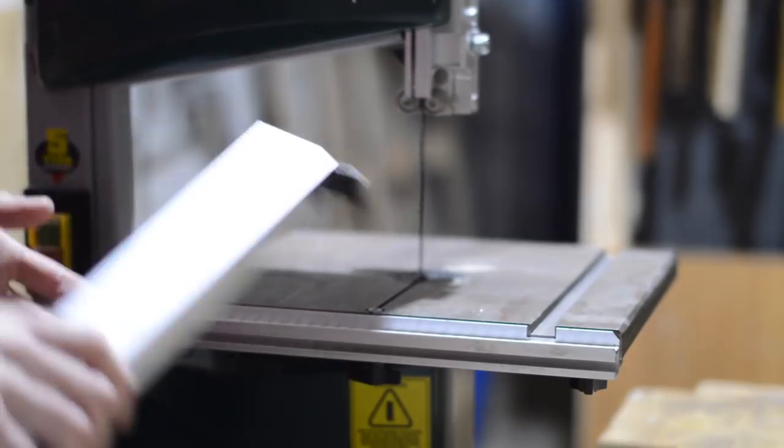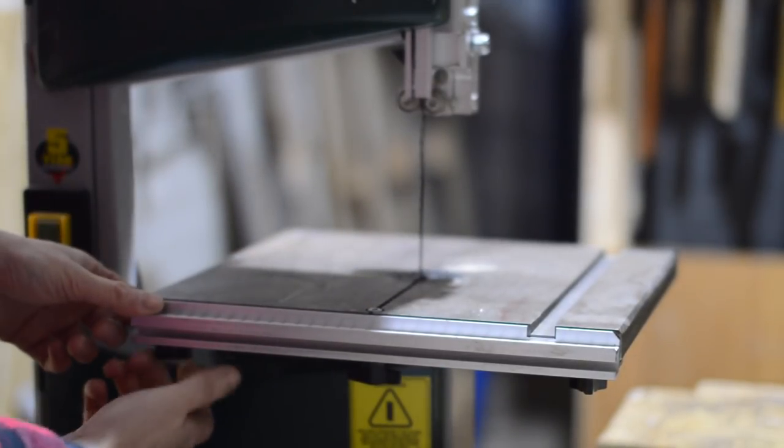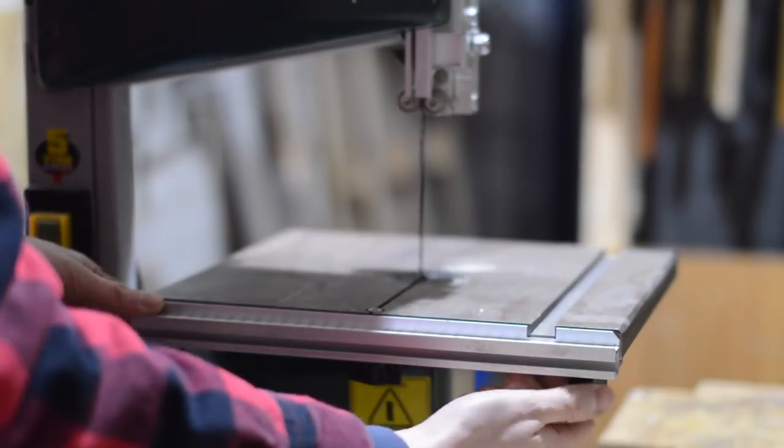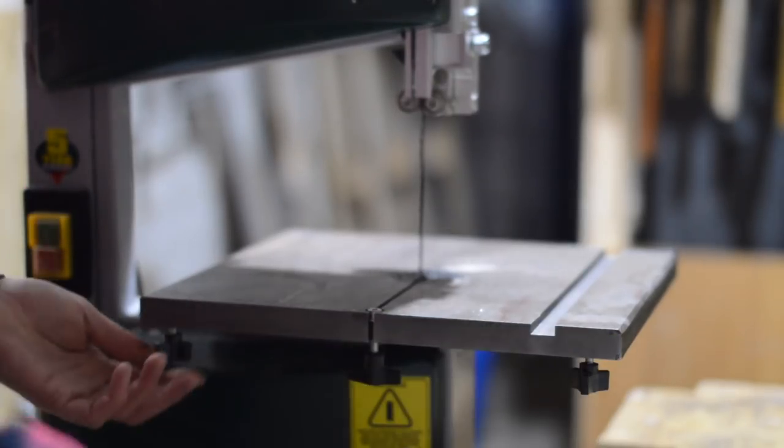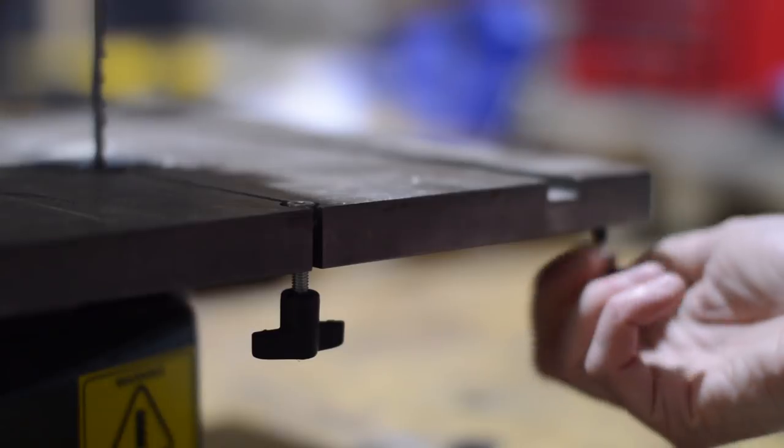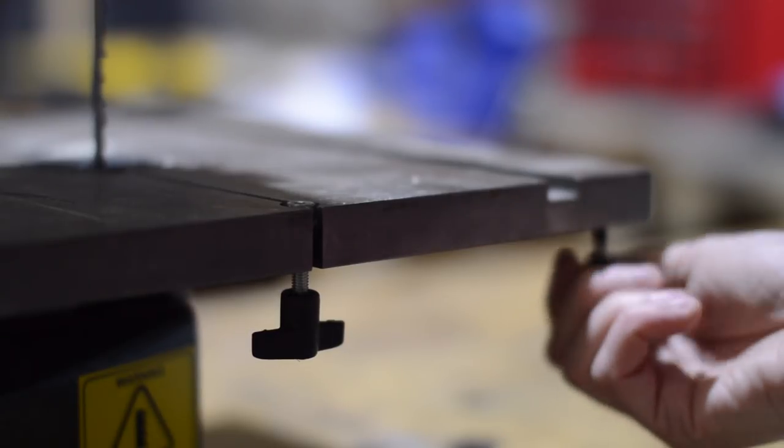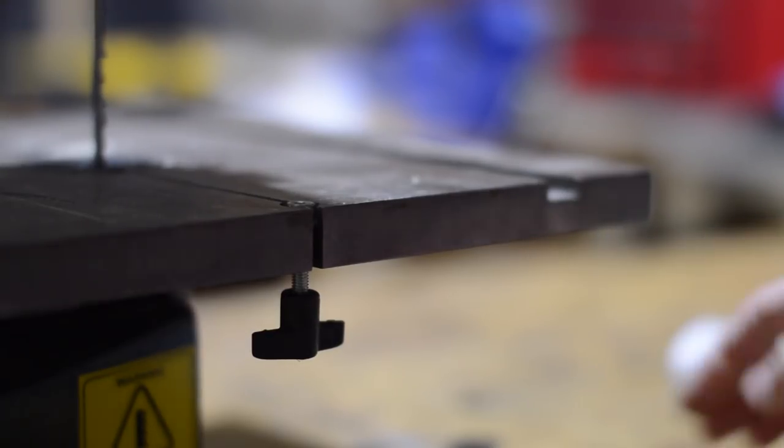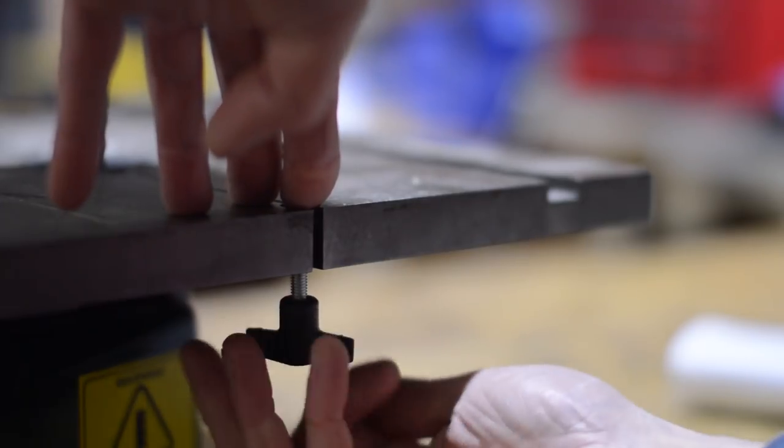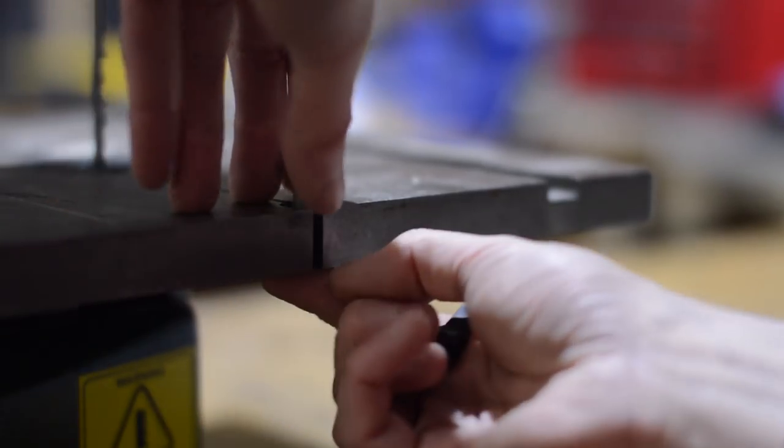The fence that comes with the machine works okay. It locks front and back, and to get the tension right you spin the handle, so I either find it's too loose or too tight. It's not a huge problem and I can live with it, but this new fence costs something like 14 pounds from Axminster, so I thought it's worth a go to see if it improves things.